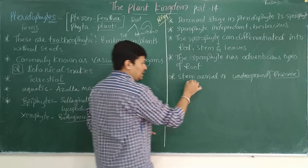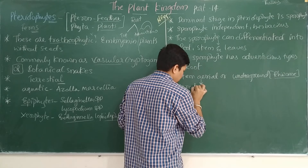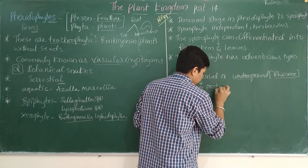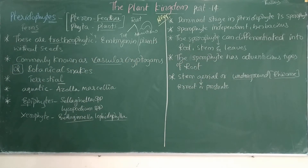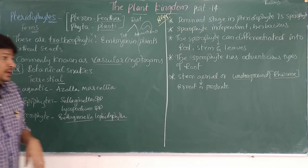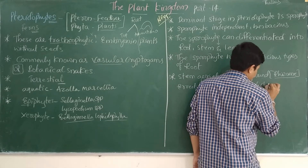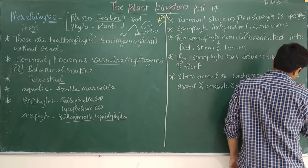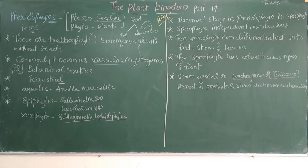If the stem is aerial, it may be erect or prostrate, and it is going to show dichotomous branching. The stem is dichotomously branched — that is a distinguishing feature we can identify.